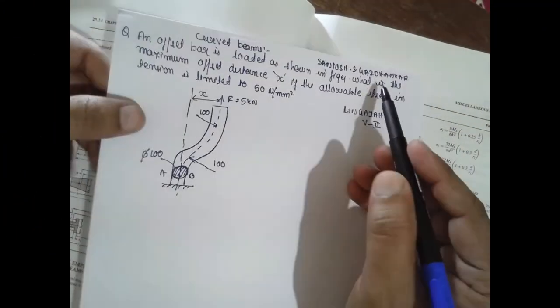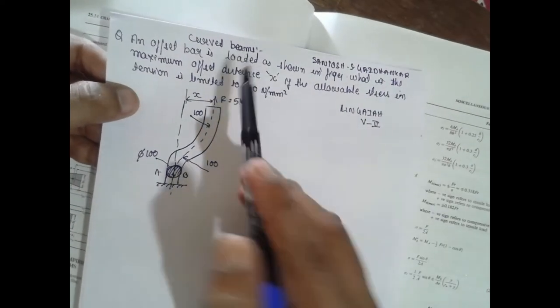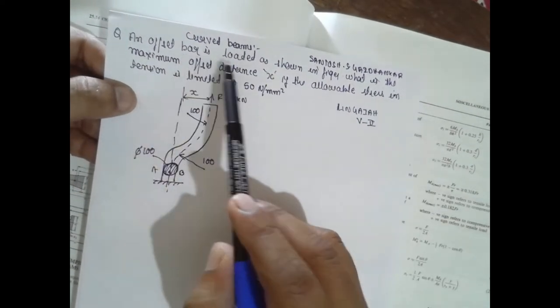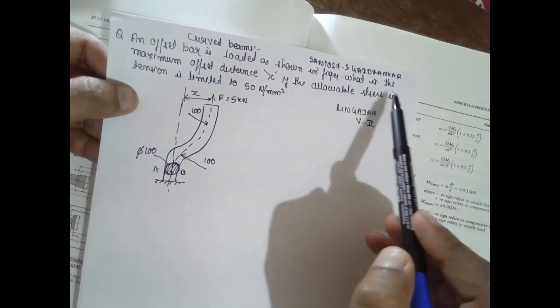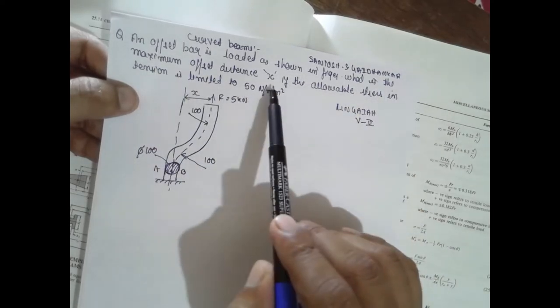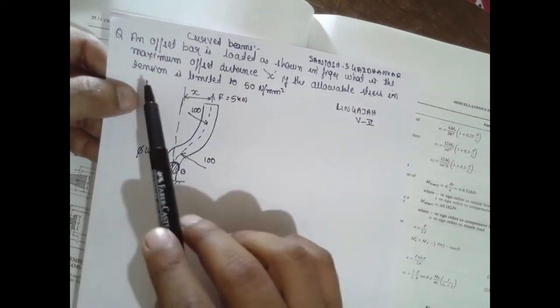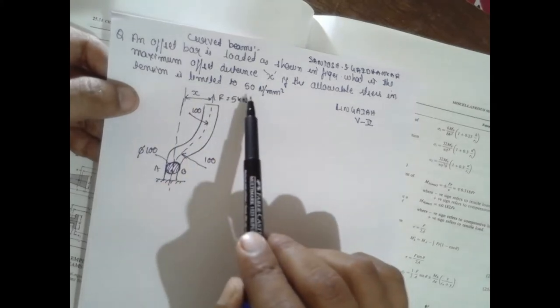Hi, I am Suntush Dayadankar. Today's concept is about the curved beam. This is the problem: an offset bar is loaded as shown in the figure. What is the maximum offset distance at x if the allowable stress tension is limited to 50 N per m²?